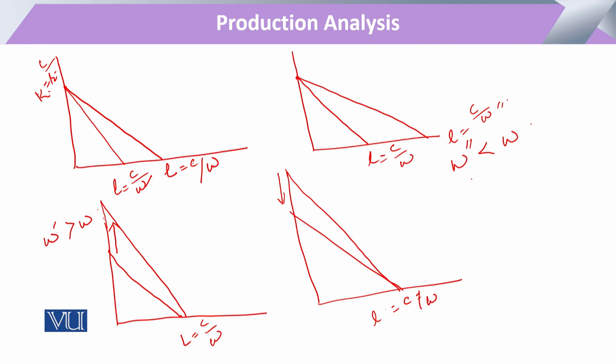In the same manner, if the prices of both inputs are just going to double, it means that the denominator is going to double here and also here. So it will be just like the budget line will shift inward. Now the income or the budget available to the producer is the same, but due to the change in the prices of both inputs, it is just like the budget has reduced to half.